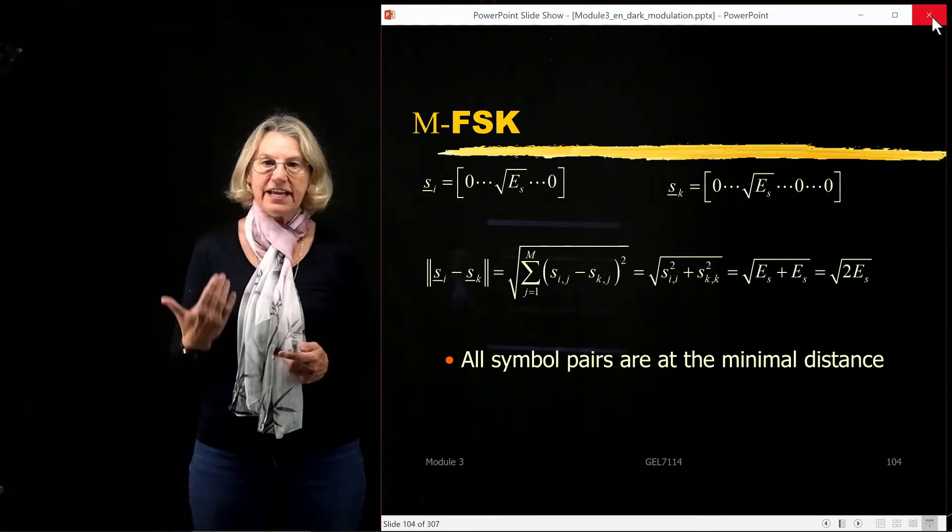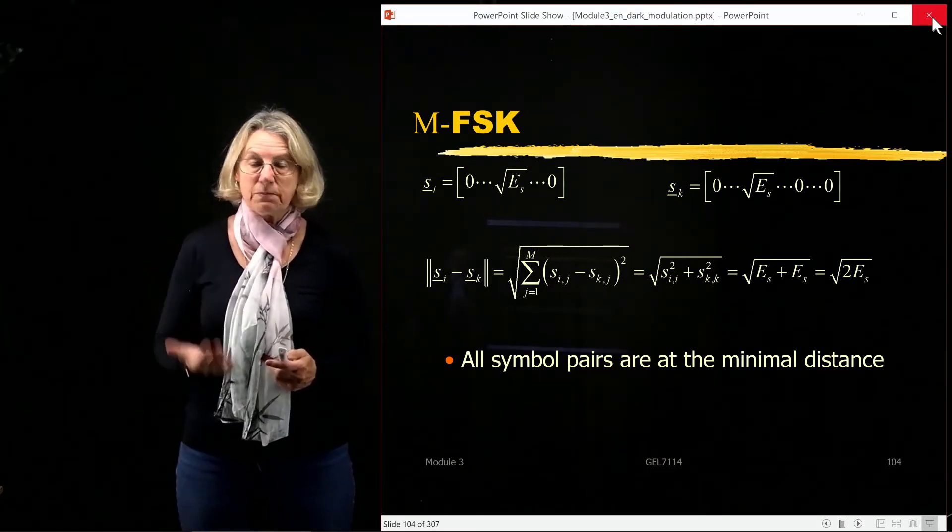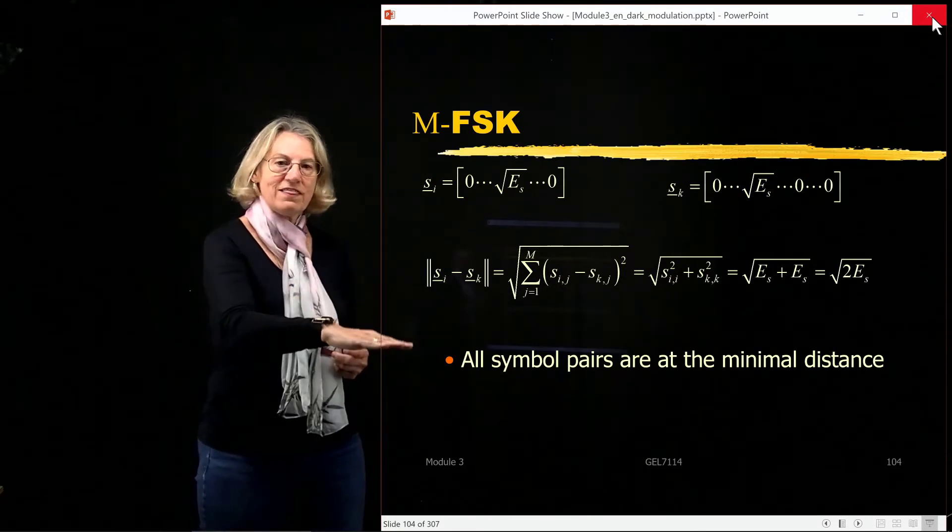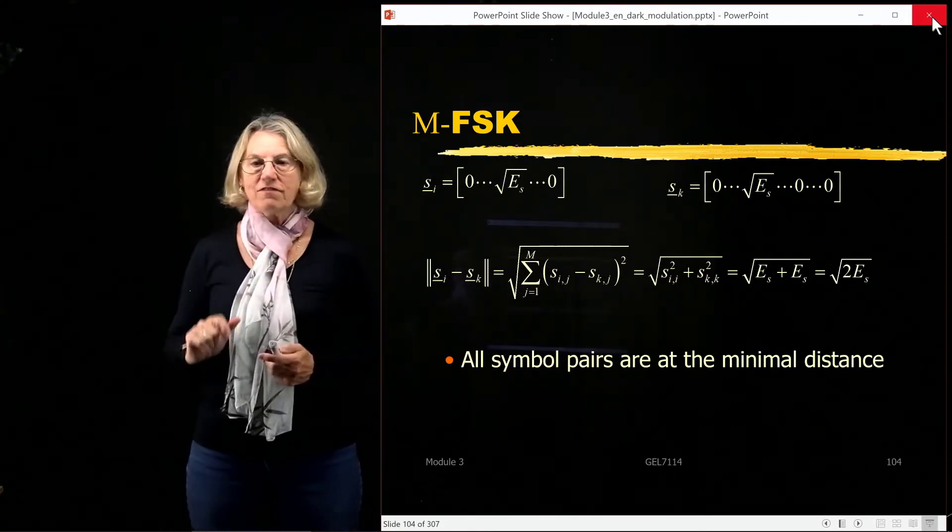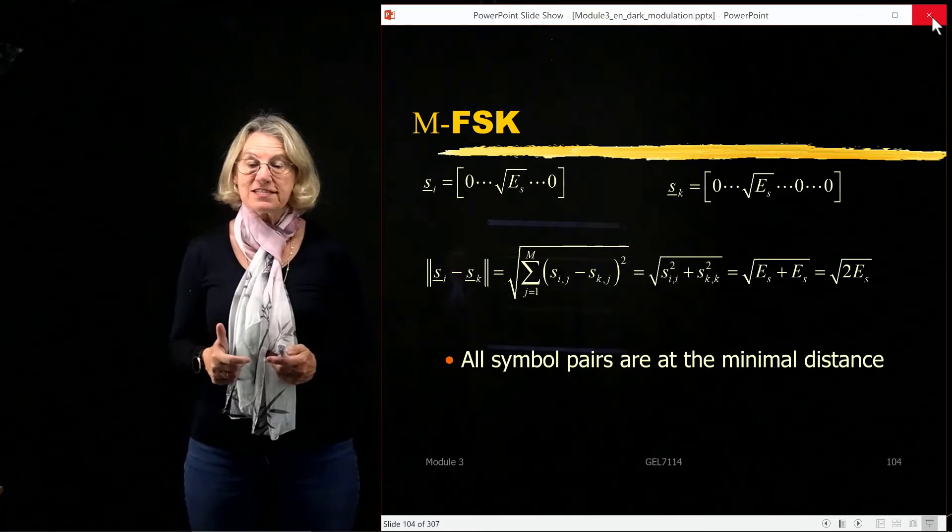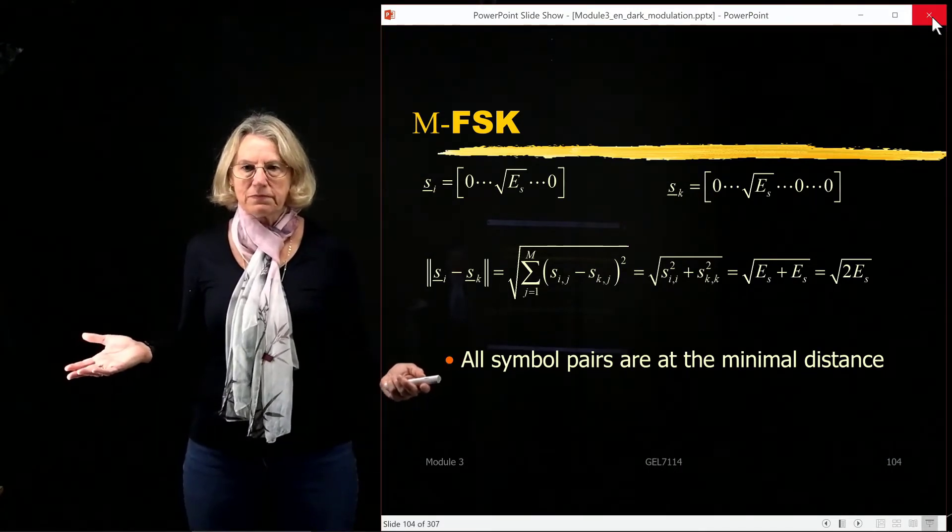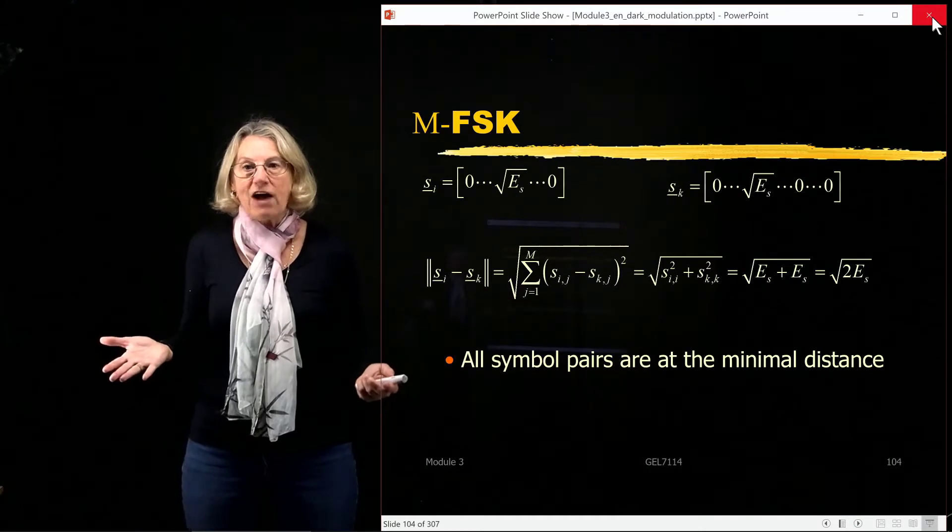So we have found the minimal distance and the next thing we need to know in order to use our union bound to calculate an approximation for the bit error rate is to know the number of pairs at the minimal distance. Now, in this case, all pairs are at the minimum distance, so I have to just be able to count all pairs.